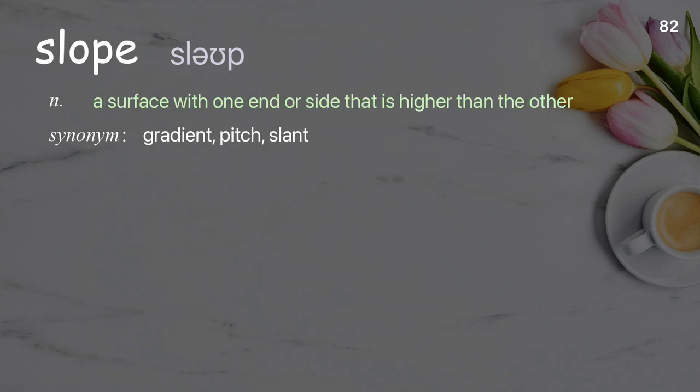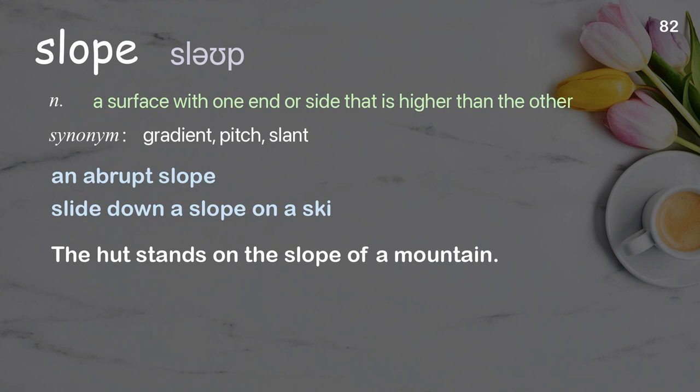Slope: a surface with one end or side that is higher than the other. Examples: An abrupt slope. Slide down a slope on a ski. The hut stands on the slope of a mountain.